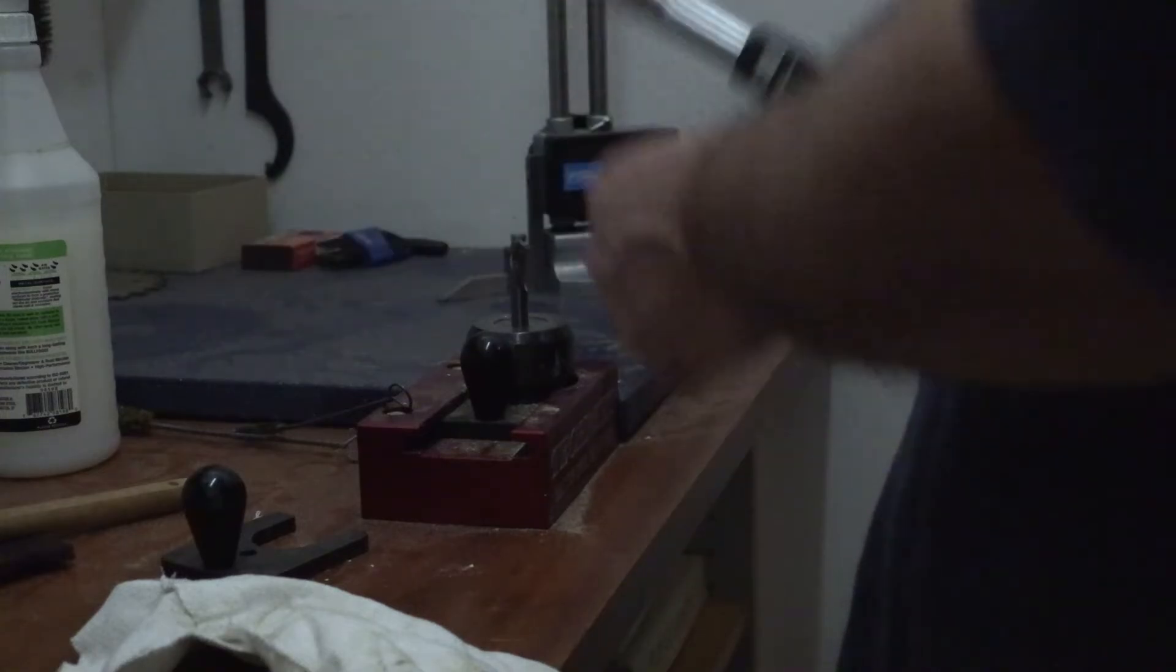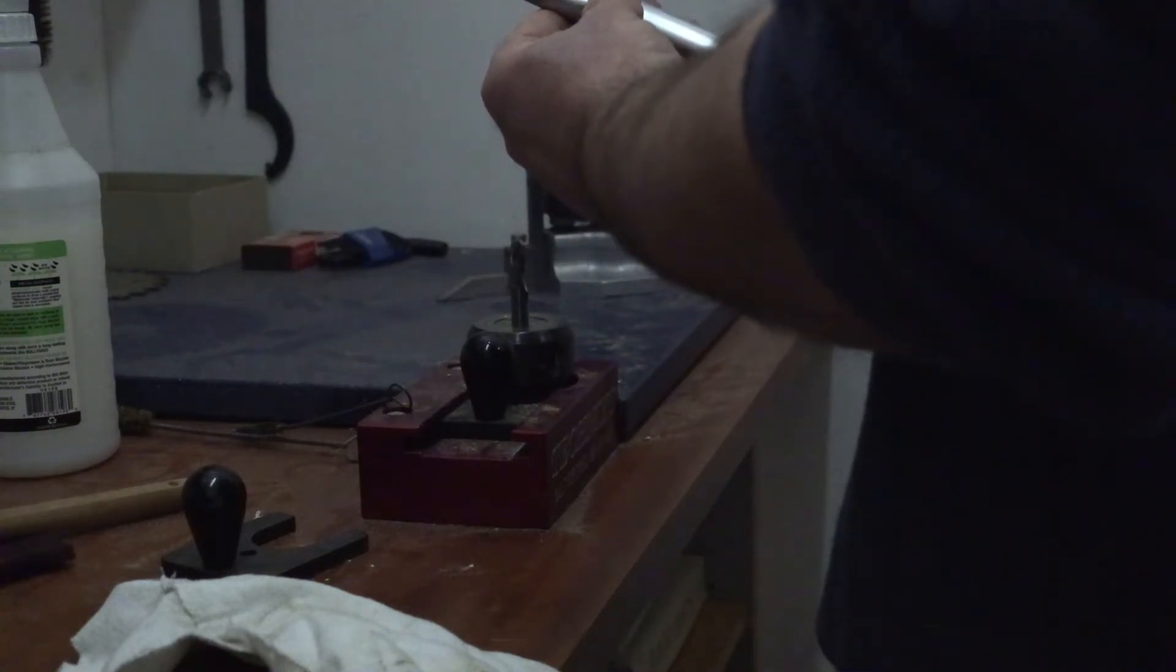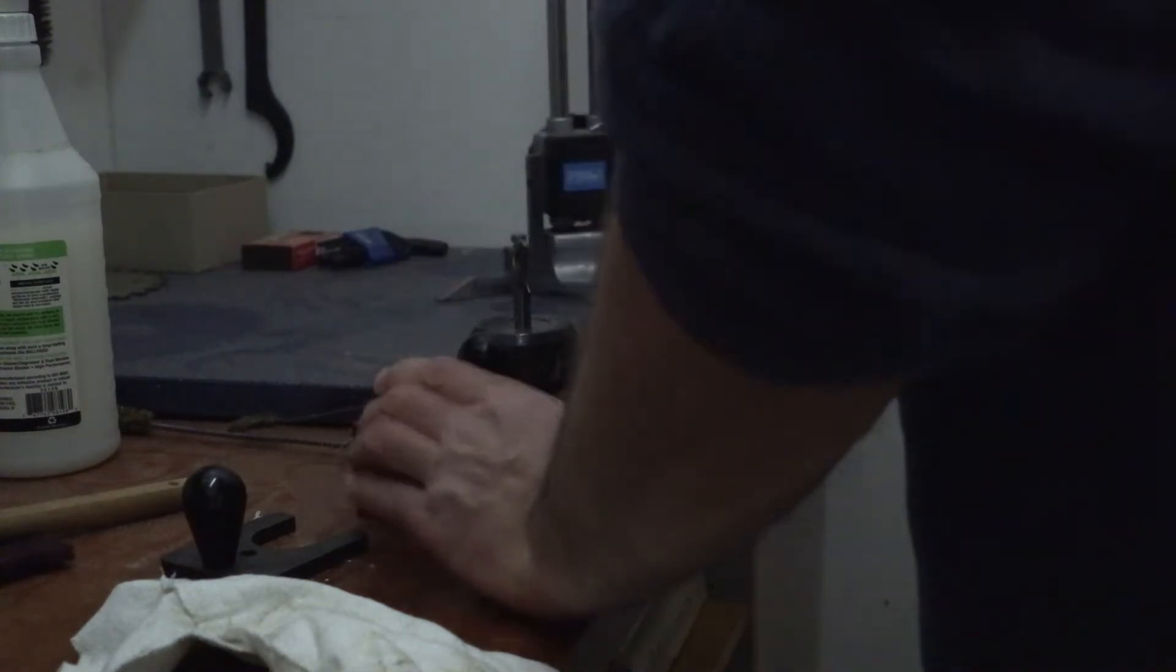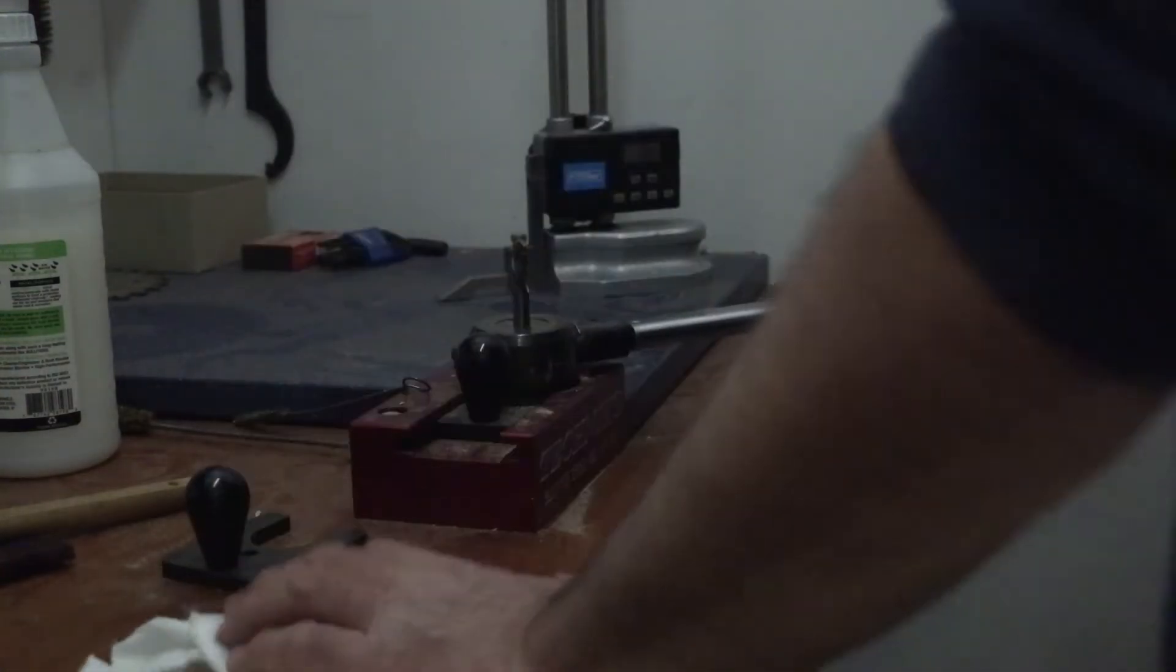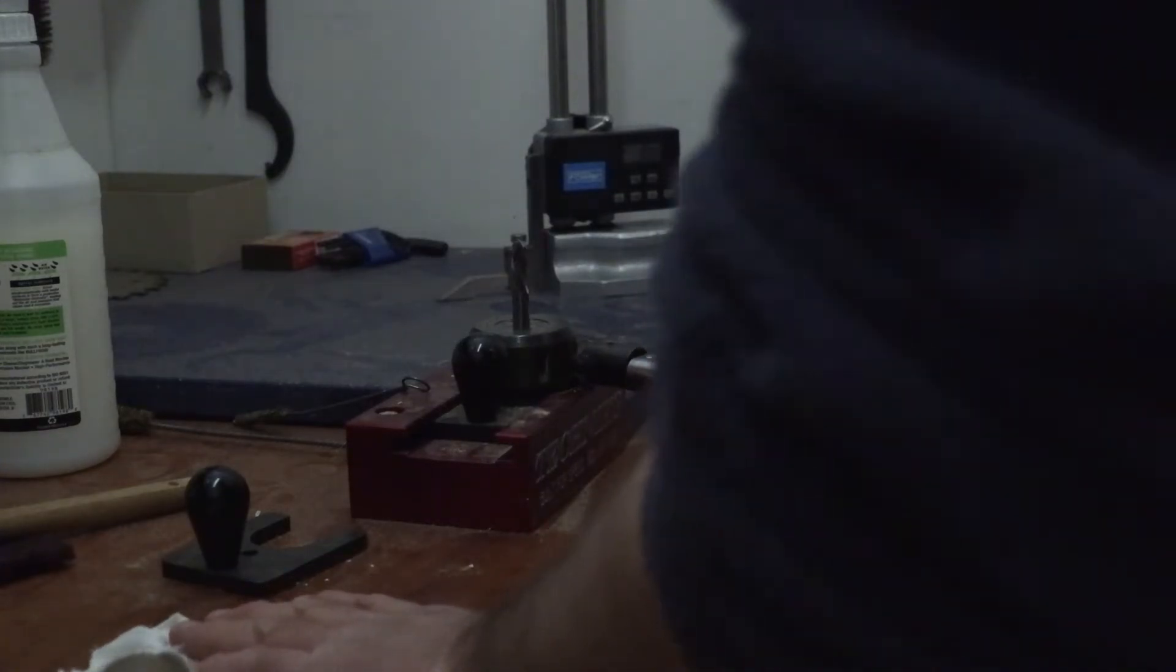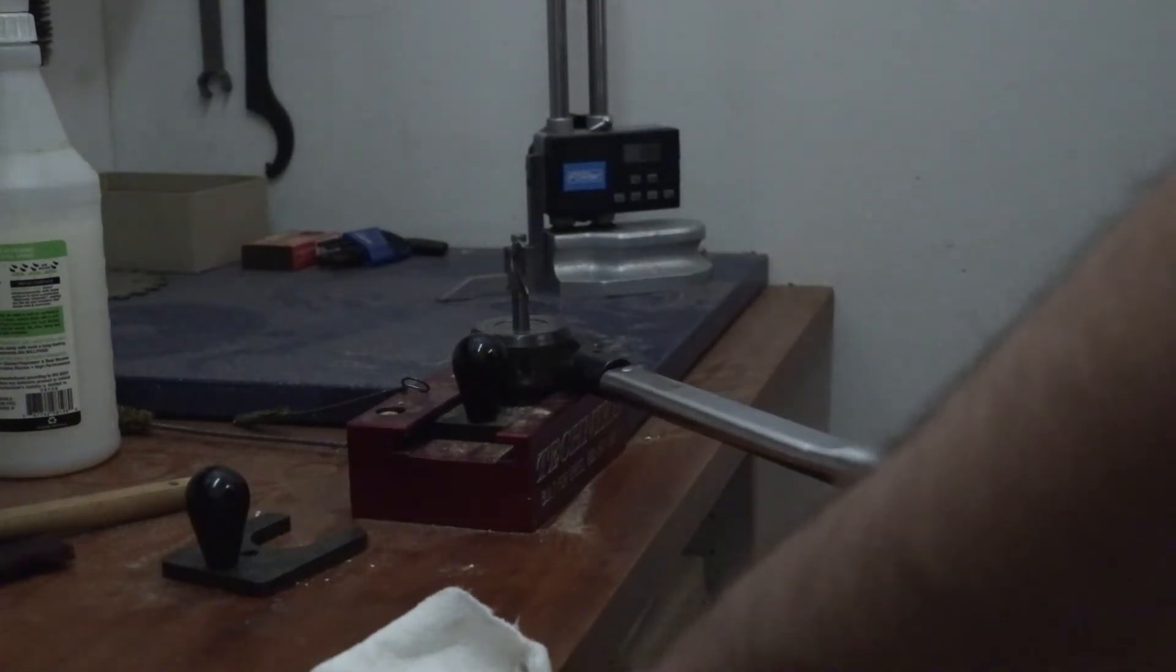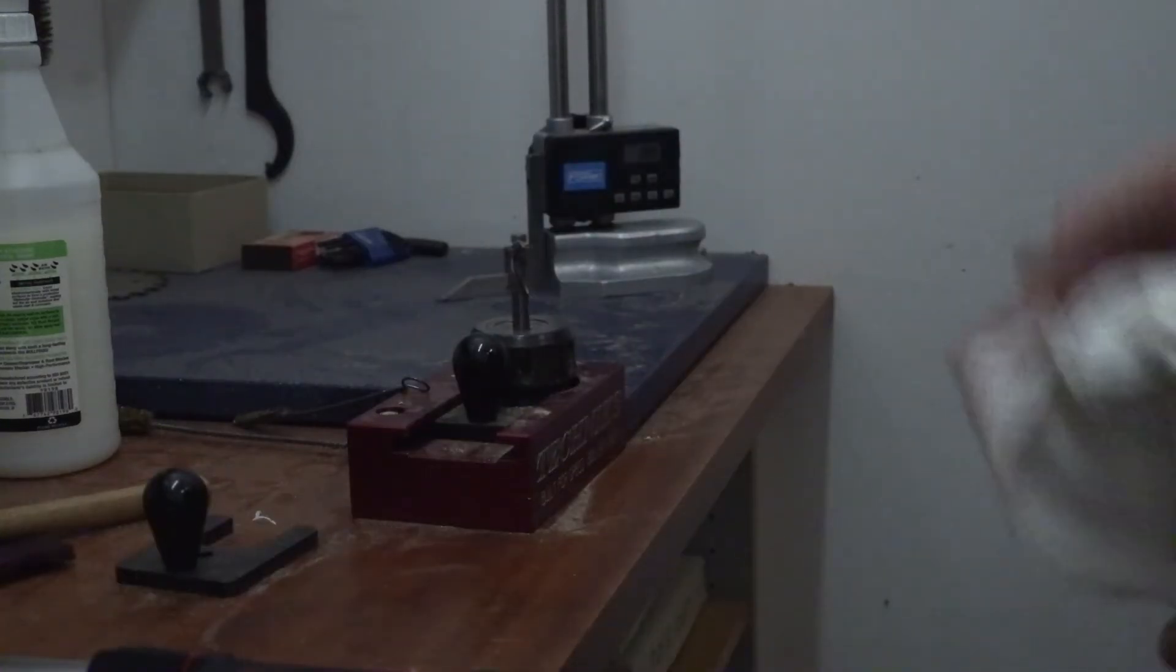And we have our torque wrench set to 90 foot-pounds. And what we want to do is we want to put your tool in with one hand and you want to tighten the nut until we get a click. Like that. Once it clicks, we're done. Don't need to go any further than that.